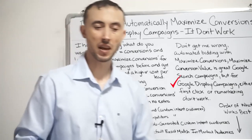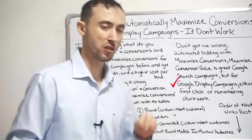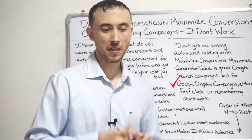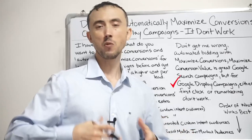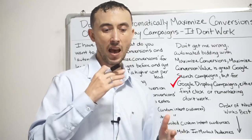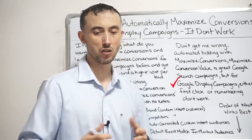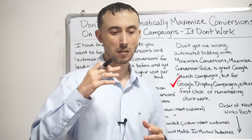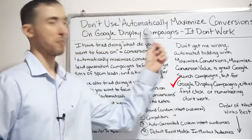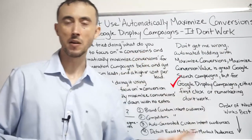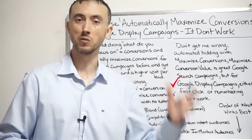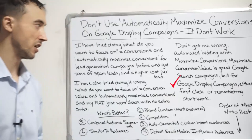As it pertains to automatically maximize conversions — if you aren't aware, that's under the settings menu, under bidding. It'll ask what do you want to focus on; you can select conversions. But when it asks how do you want to get conversions, you want to manually select bids — not automatically maximize conversions. That's specifically the danger zone, what you want to stay away from; it's going to waste tons of your money and you're not getting quality leads or sales for it.